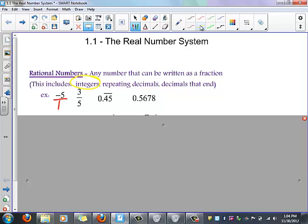3 fifths is already written as a fraction. 0.45 repeating, this would be considered a repeating decimal, it is also a rational number. And then the decimal that ends means it's a decimal that has a definite ending point. It ends right here, does not go any farther. It's a rational number.